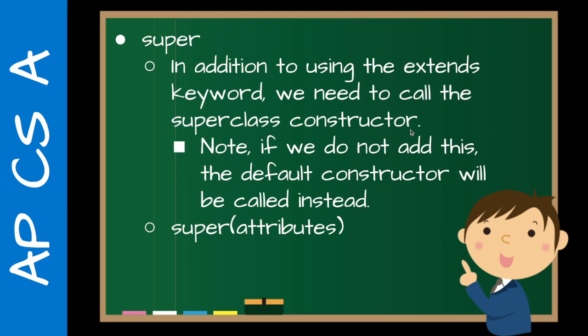Then in the constructor, we also need to call the superclass constructor. If we don't do that, it will call the default constructor for us and everything's just set up. But if we want to use one of the non-default constructors from the last unit, then we need to specifically say super with the arguments — like name and age — to actually call that particular constructor. If we don't, the default constructor will be called for us, which is convenient.